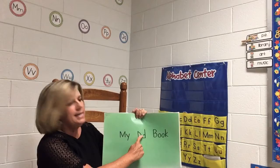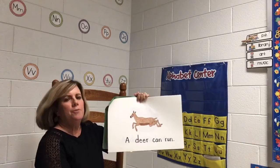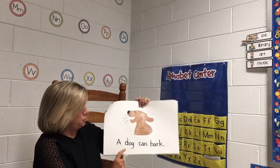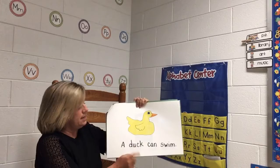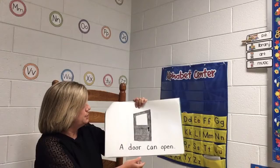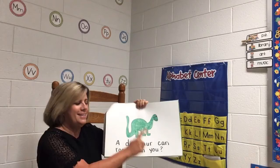All right, let's look at some more things that begin with the letter D. This is my D book — it just has a few pictures for us to look at. A deer can run — deer begins with the letter D. A dog can bark — dog begins with the letter D. A duck can swim — duck begins with the letter D. A door can open — door begins with the letter D. A dinosaur can roar — can you? Dinosaur begins with the letter D.